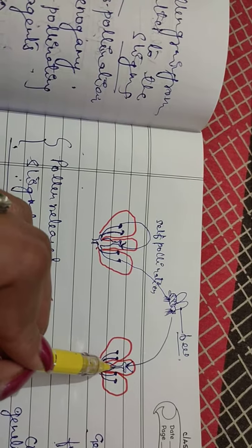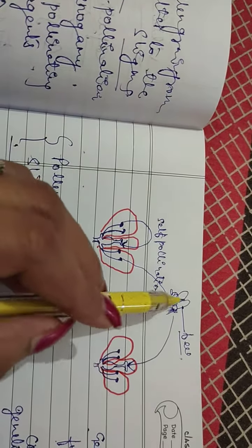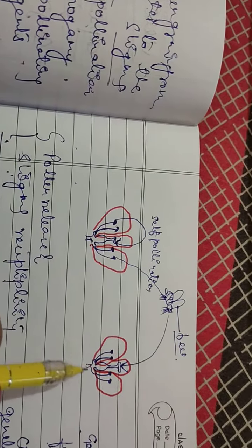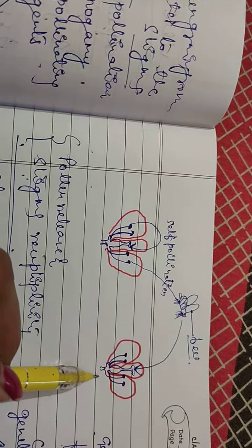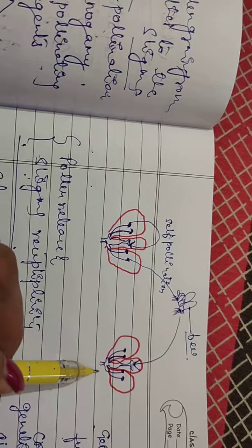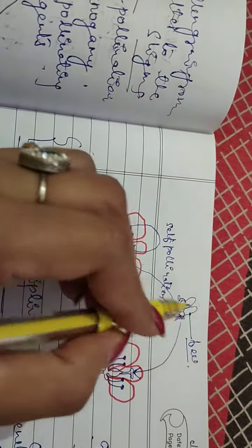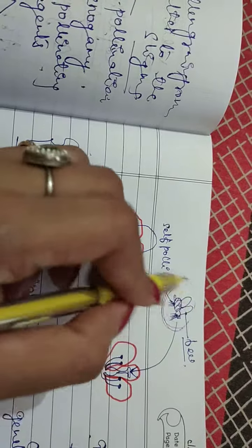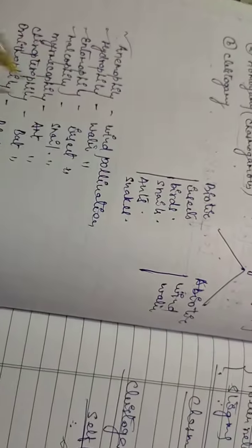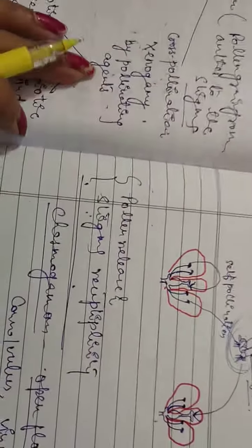This process, where pollen transfers between flowers of genetically different plants, is also called xenogamy. It can occur with the help of any pollinating agent, such as insects or other agents.